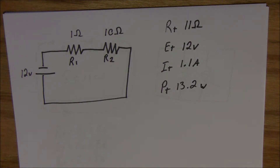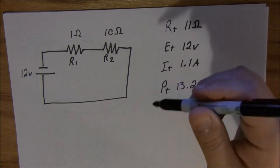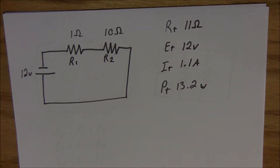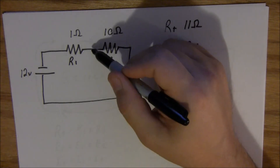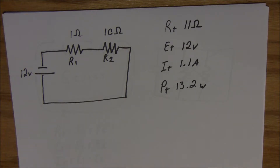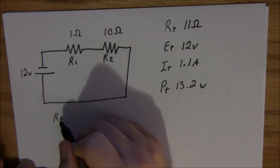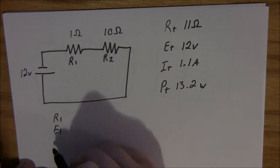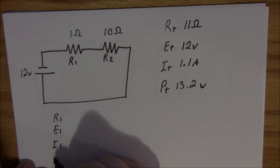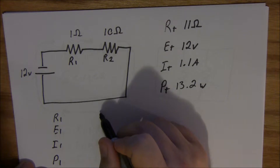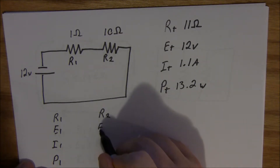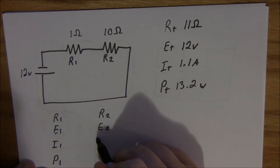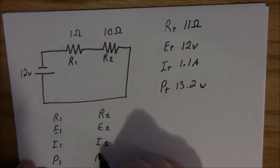Now there's going to be times in electronics when you're using resistors in series and you need to know the voltage and the power at each resistor — say for instance if you're using it as a voltage divider, there's a different voltage right there in the middle of those two resistors and you have to figure out what it is. So we're going to try to find R1, E1, I1, and P1, and also R2, E2, I2, and P2.